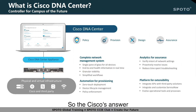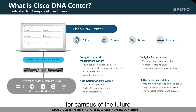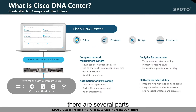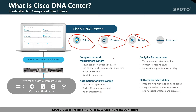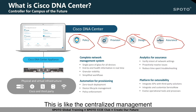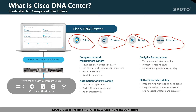Cisco's answer to these requirements is their DNA Center solution — a controller for the campus of the future. Within the Cisco DNA Center, there are several parts. The first is Design, which defines your sites at a high level with all components. The second is Policy, which defines how to use the hardware and the network. The third is Provision, which pushes these policies with the design to the hardware. The last is Assurance — the centralized management, single pane of glass — telling you what is going on and how healthy the network is.